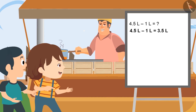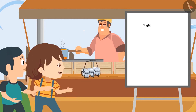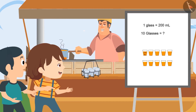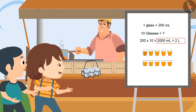Now, could you please bring the cup of tea? Sure, Daddy. Here is the cup of tea. If each cup carries 200 milliliters of tea and I have made 10 cups of tea, can you tell me how much milliliters of tea I have prepared? 2,000 milliliters. 200 multiplied by 10 means 2 liters. Yes, you both are right.